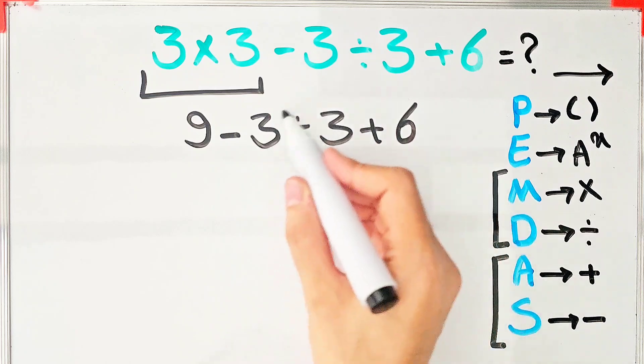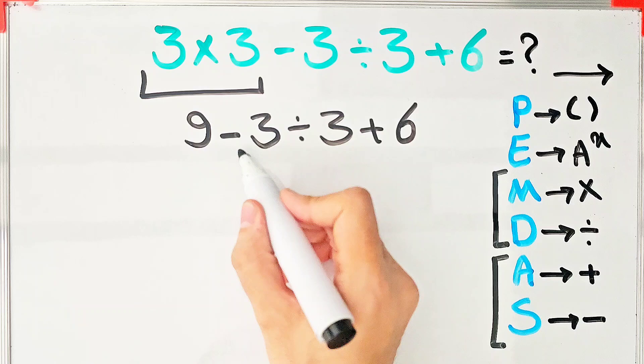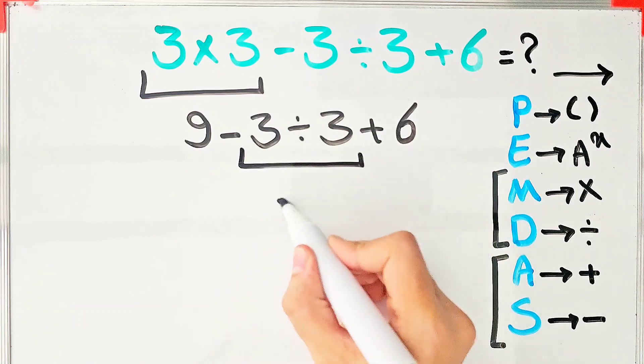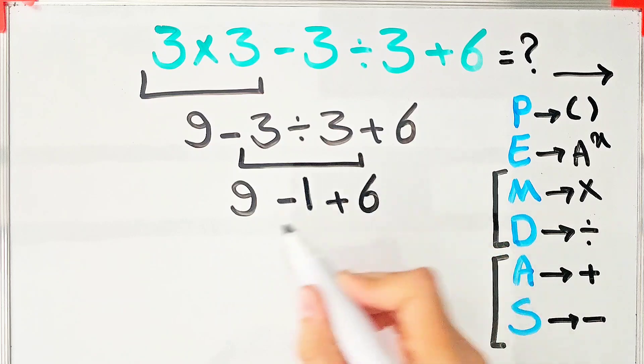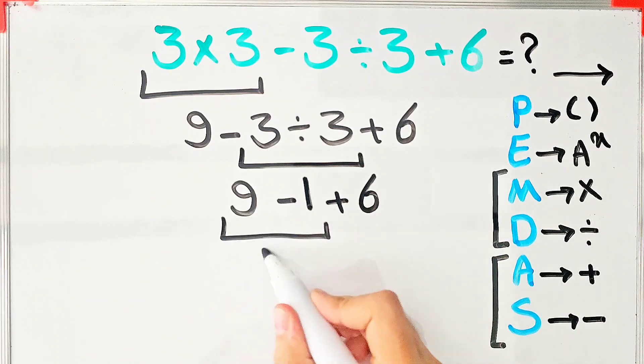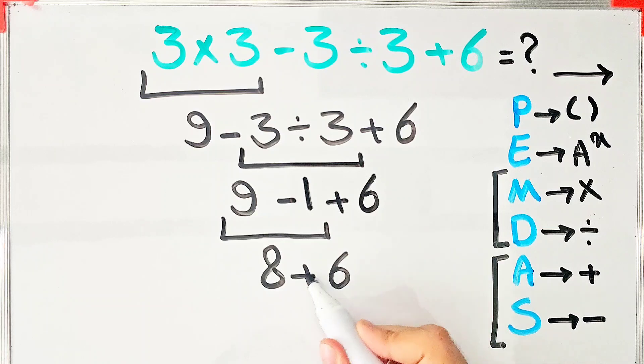First we do division because the division has higher priority than addition and subtraction. -3÷3=-1. 9-1+6. 9-1=8, and 8+6=14. The final answer of this question equals 14...